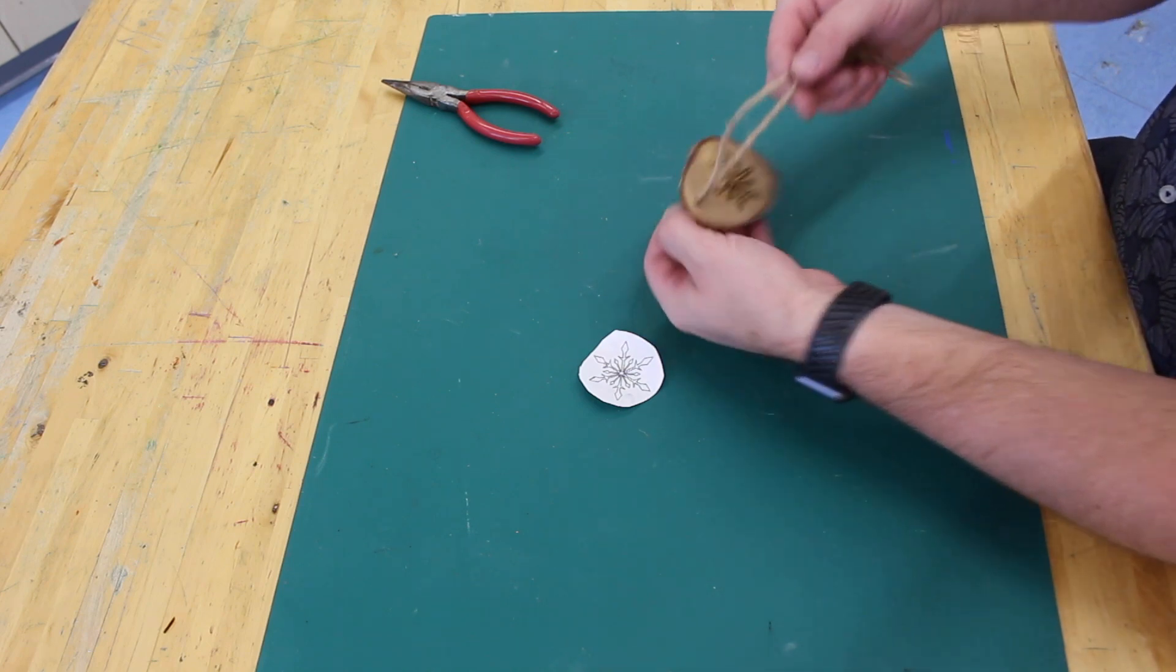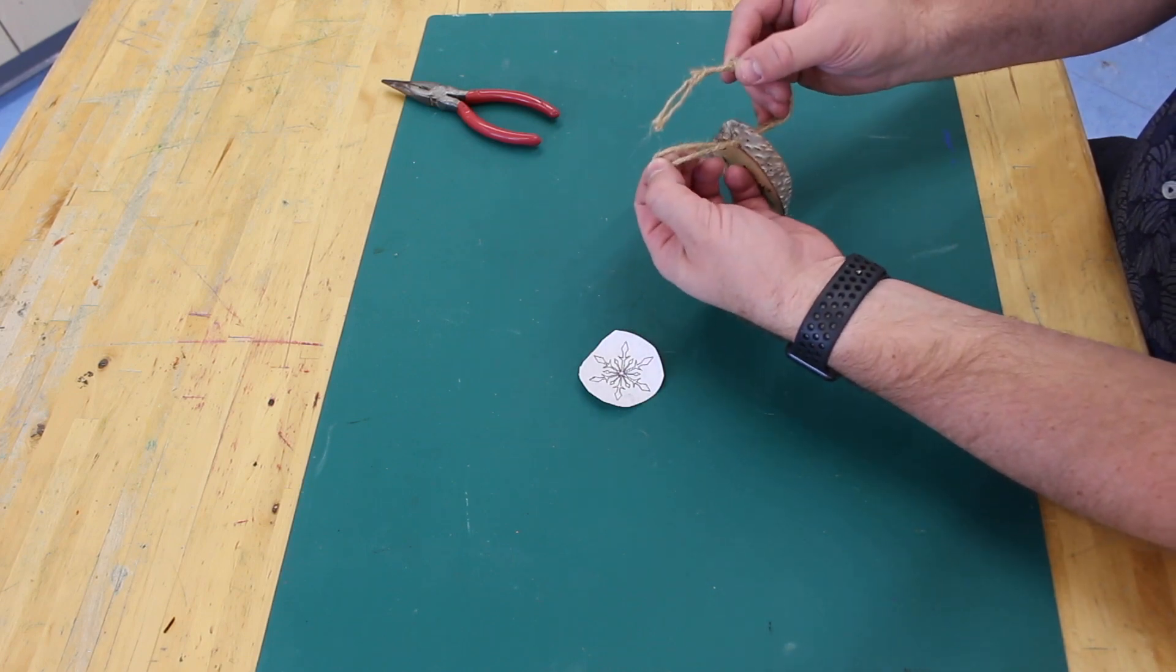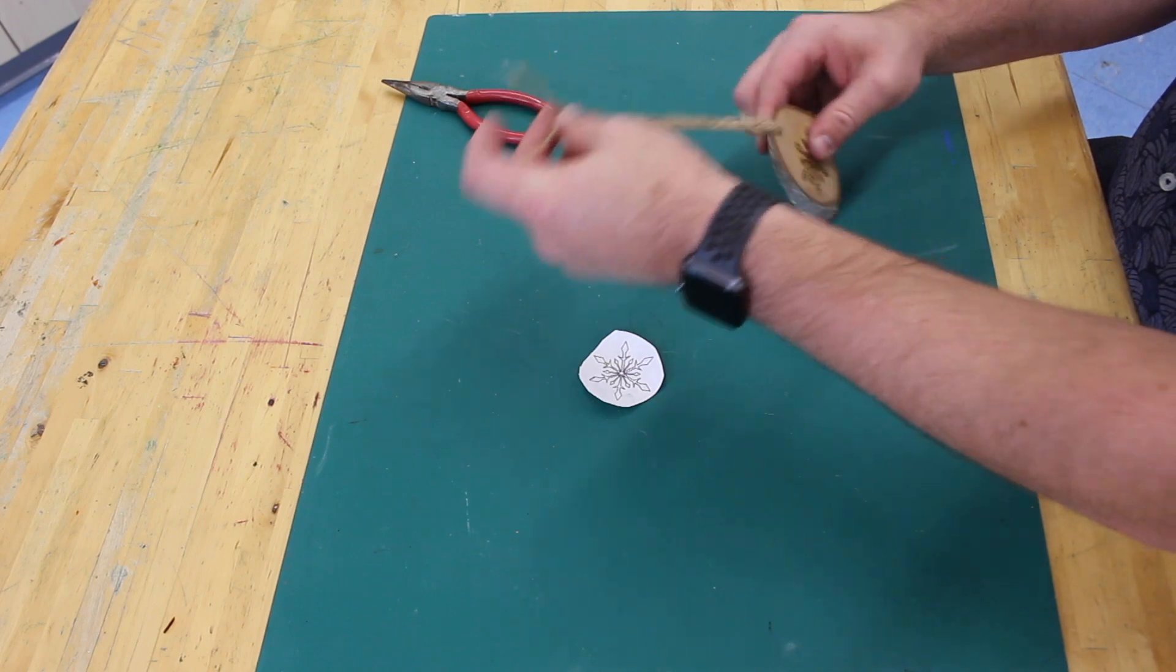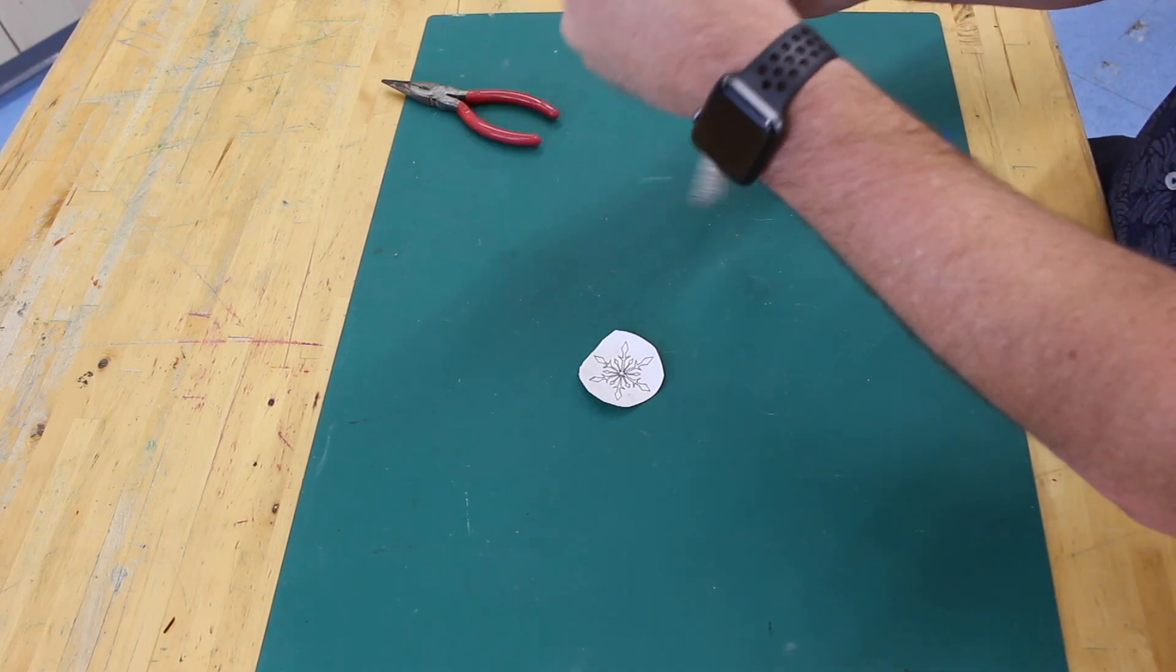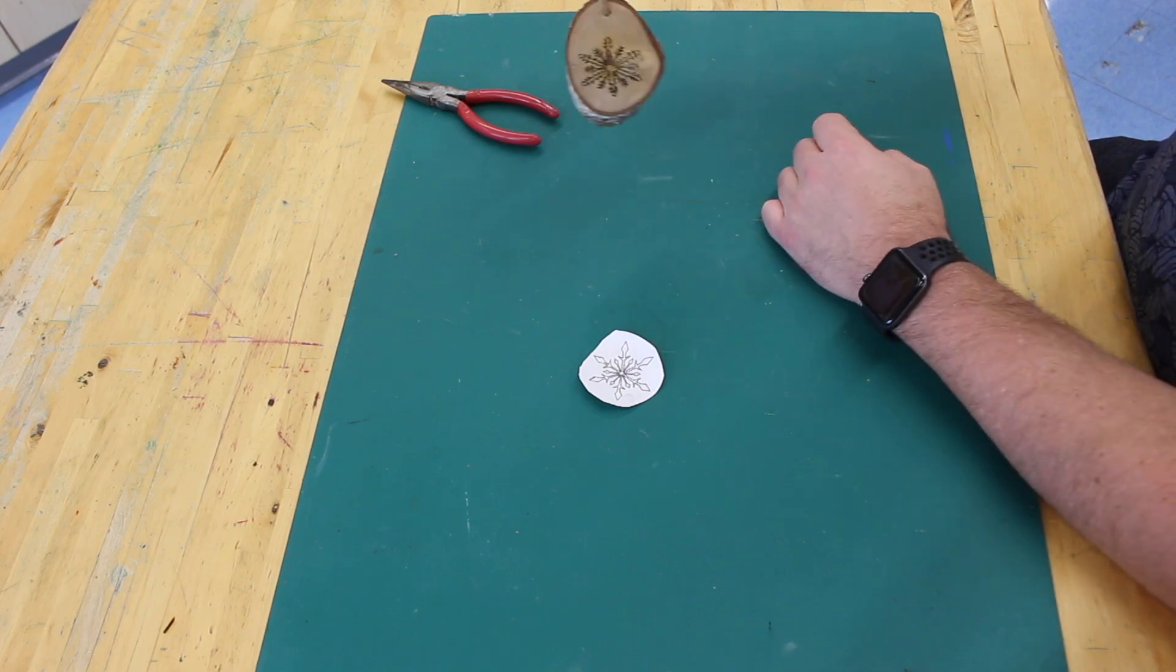Pass the loop through the hole and then bring the knotted ends through that loop on the other side. Just pull it tight with the knots at the top, and there you have it.